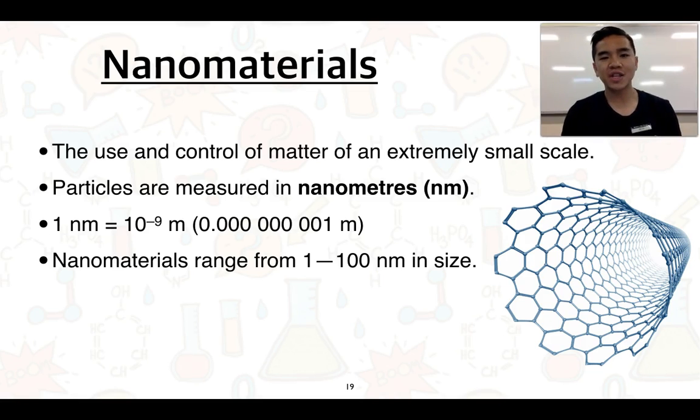So firstly, nanomaterials is a branch of science that involves the use and construction of materials on an extremely small scale. We're talking about the nanoscale, and when we look at the materials themselves, we measure them in extremely small units called nanometers. One nanometer is equivalent to 10 to the power of minus 9 meters.